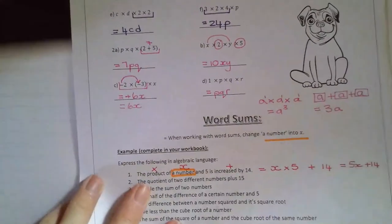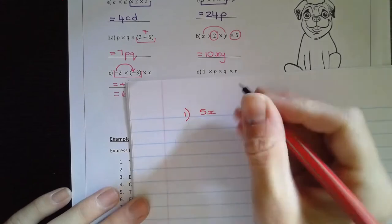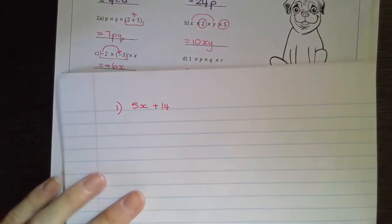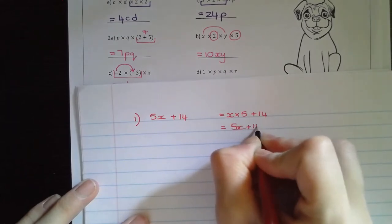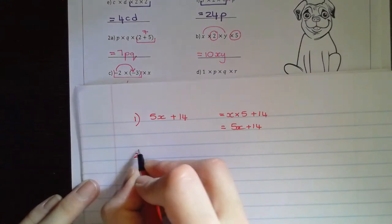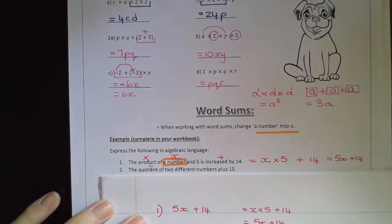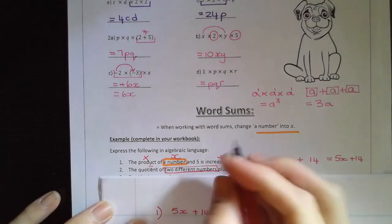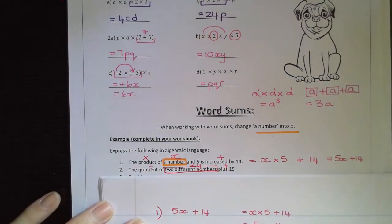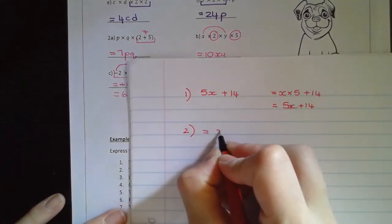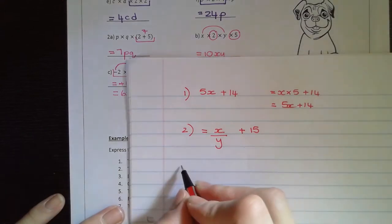Remember we're going to have, so for number one, 5X plus 14. If you're going to show the working out and you're going to say X times five plus 14, make sure you have your equal signs one underneath each other on a new line. Then question two says a quotient. Quotient means divide of two different numbers. We don't know what they are, so I'm going to call the one X and the one Y plus 15. The quotient of two different numbers plus 15. Quotient is dividing of two different numbers and then we're going to add 15.